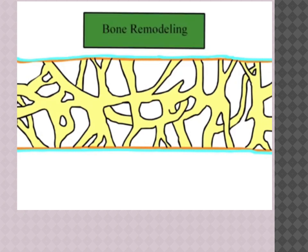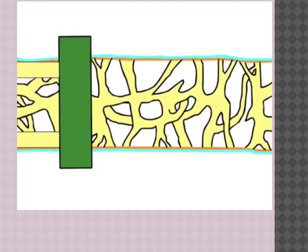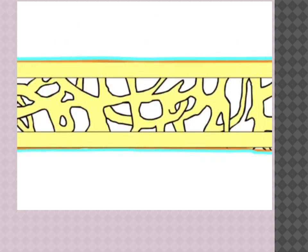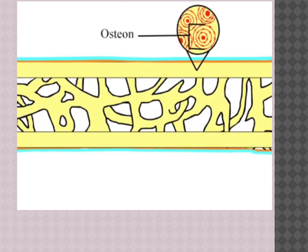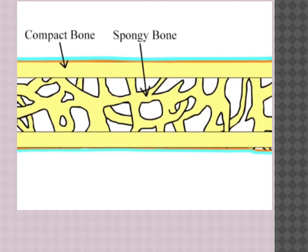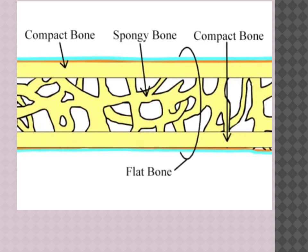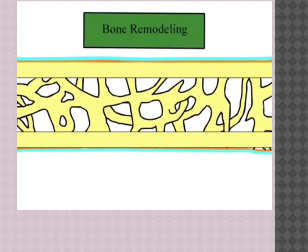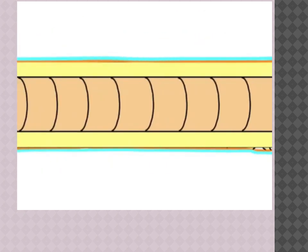Through the process of bone remodeling, osteocytes at the edge of spongy bone reorganize themselves into tightly packed bundles known as osteons. These osteons are the foundational building blocks of compact bone, which forms on the outside edges of the spongy bone. This layering of compact bone, spongy bone, and compact bone again is the defining characteristic of flat bones. Through a different process of remodeling, the middle layer of spongy bone can be removed, creating a medullary cavity.